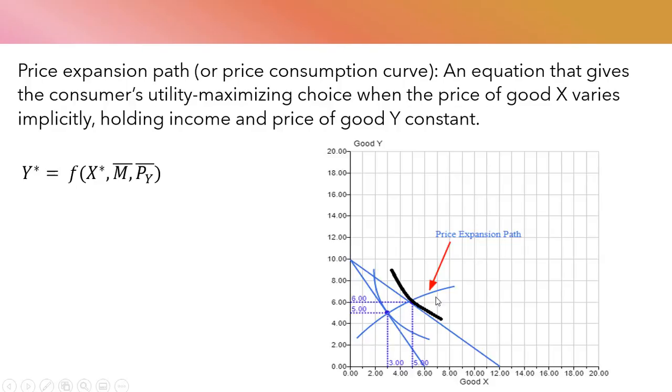where the consumer is now consuming 6 units of Y and 5 units of good X. This line through these utility-maximizing points is what we're going to derive. We're going to derive an equation for this curve, the price expansion path.